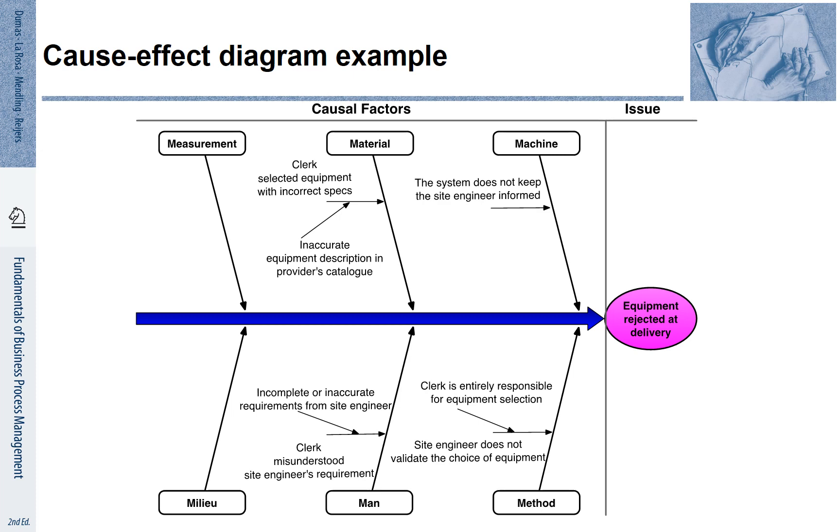Let's start with material. It could be that the clerk selected equipment with incorrect specification. Why could that be the case? Well, maybe because there is an inaccurate equipment description in the catalogue.